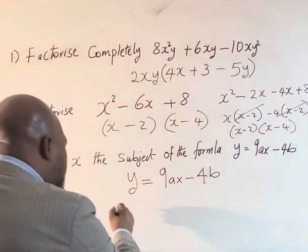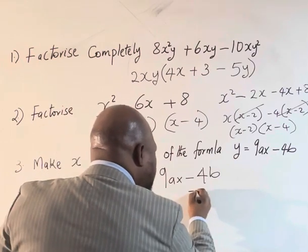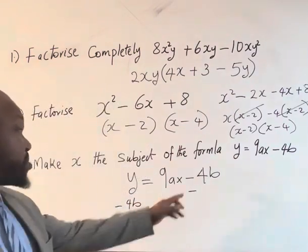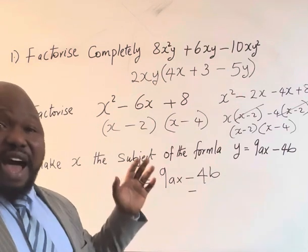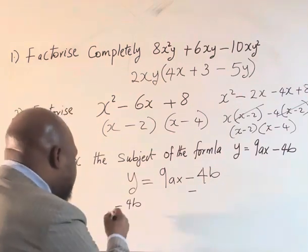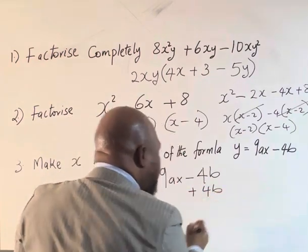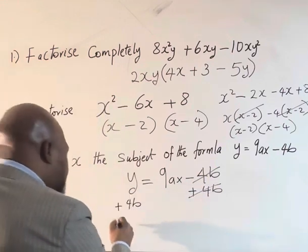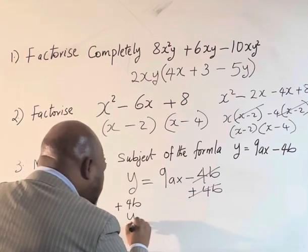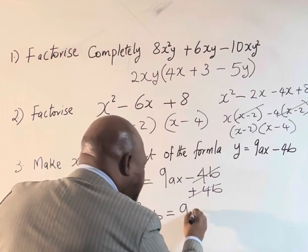This is minus four b, so we are not removing minus four b from both sides, we are adding four b to both sides. Plus four b, plus four b. Which means four b will go out. In this case, we now have y plus four b equals nine a x.